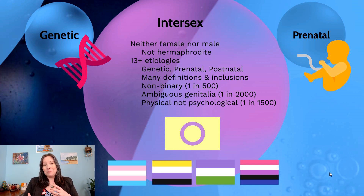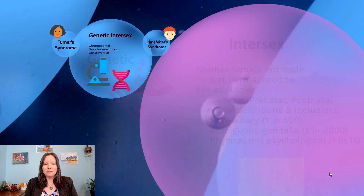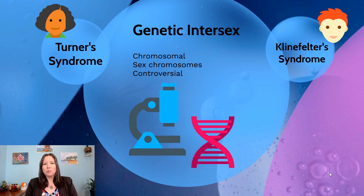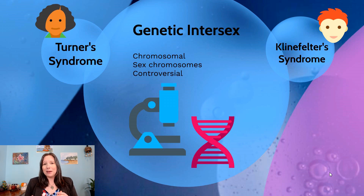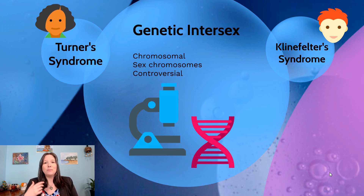How could there be a physiological difference not completely encapsulated by genitalia? To help understand that, we'll talk about some examples — some genetic causes as well as some prenatal causes. When we talk about genetic causes of intersex, we're really talking about chromosomal atypicalities centered on the sex chromosomes. This is controversial because some individuals with these atypicalities do not identify as intersex, as these conditions appear on a spectrum. Two possible examples are Turner syndrome and Klinefelter syndrome.